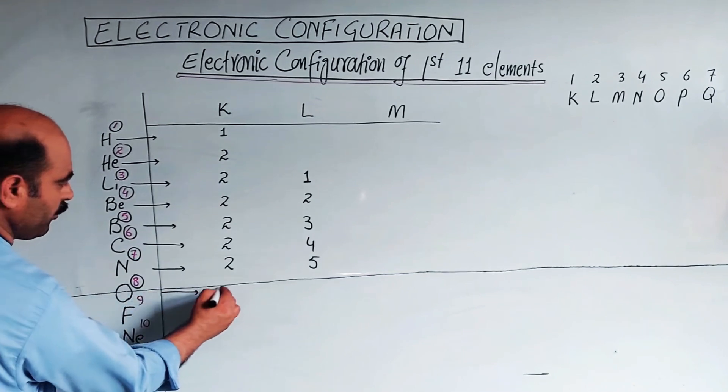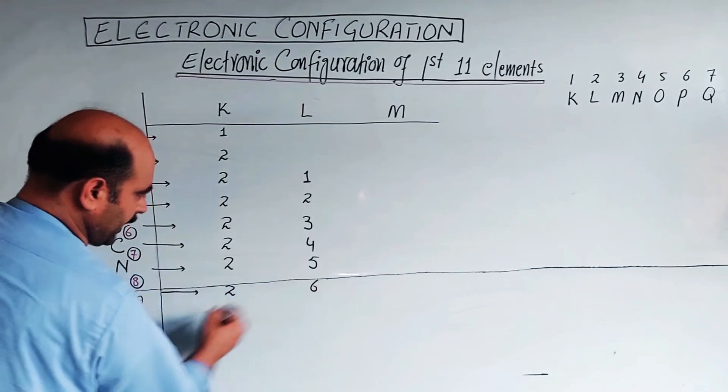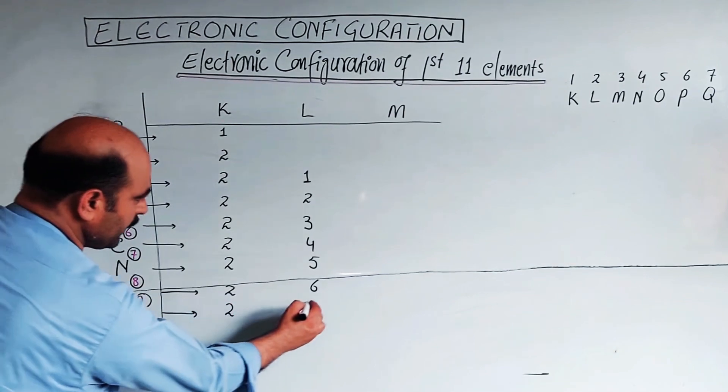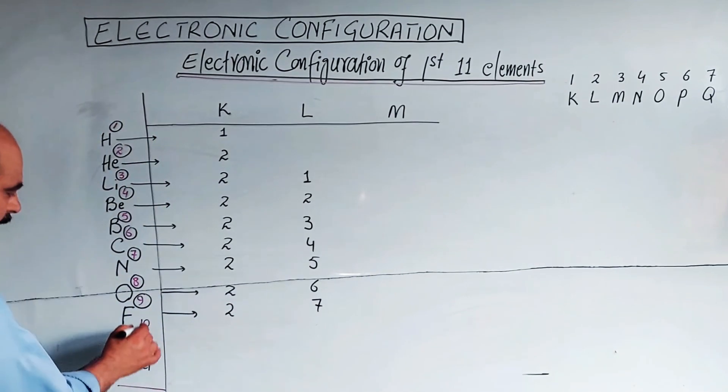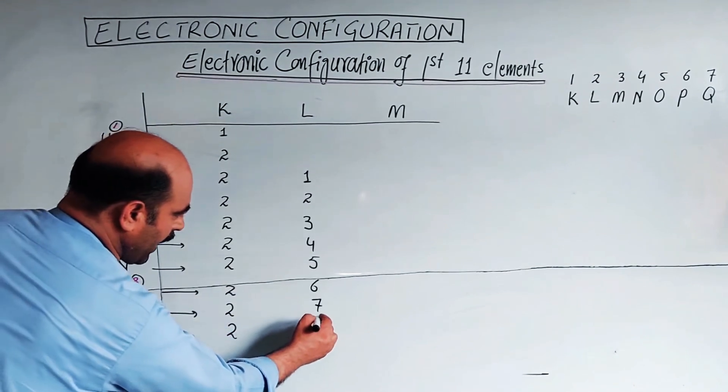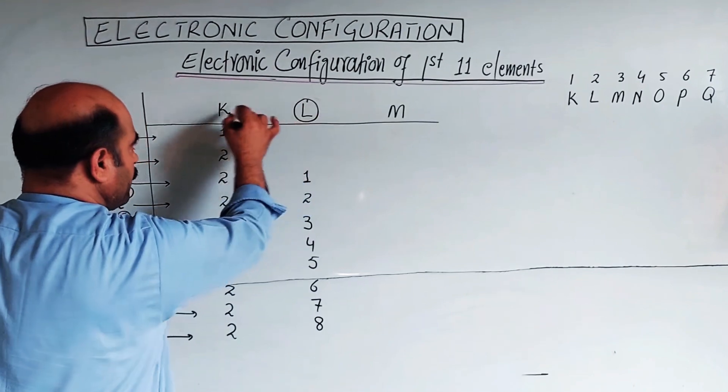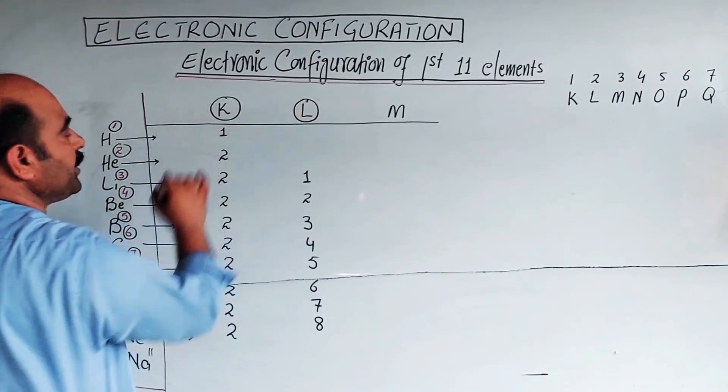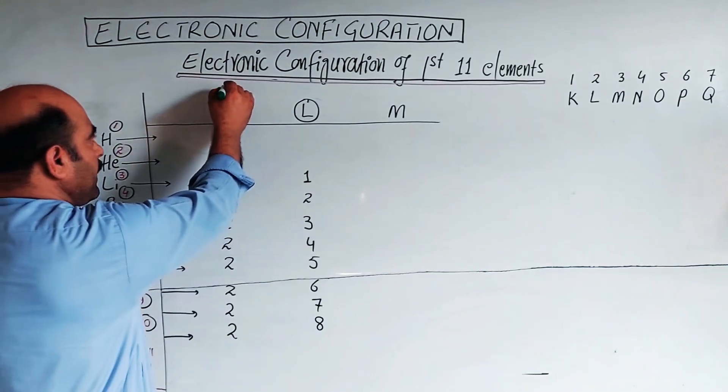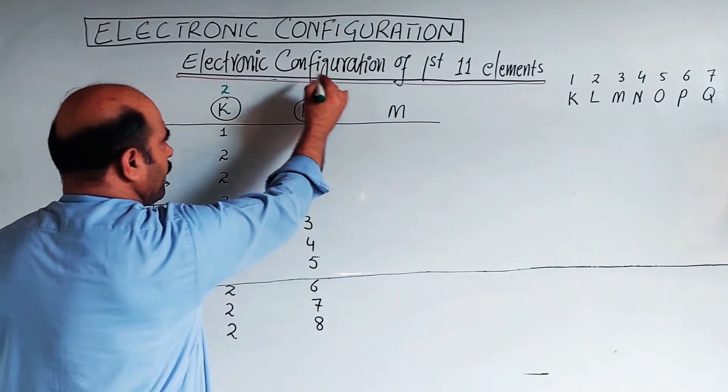Oxygen: atomic number 8, so 2, 6. Fluorine: atomic number 9, so 2, 7. Neon: atomic number 10, so 2, 8. The second shell is now complete with 8 electrons maximum.